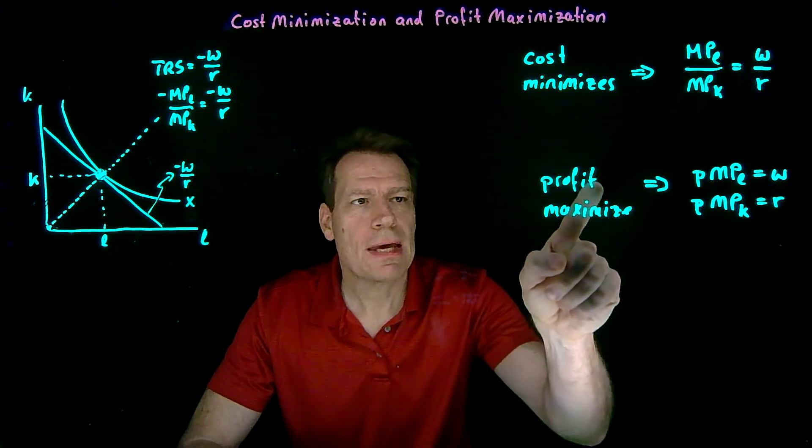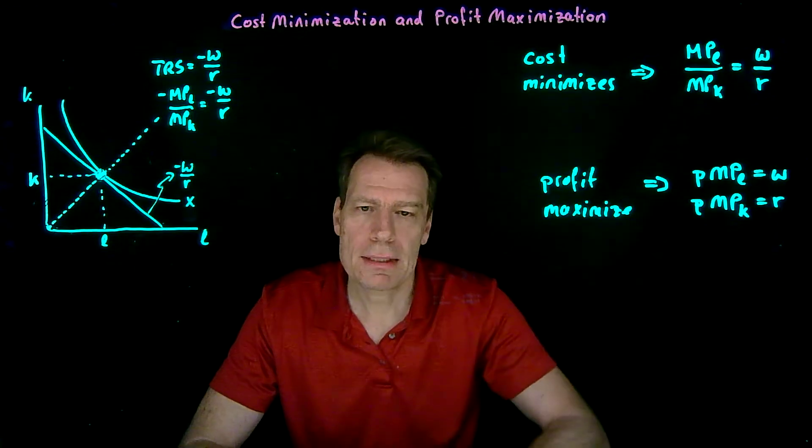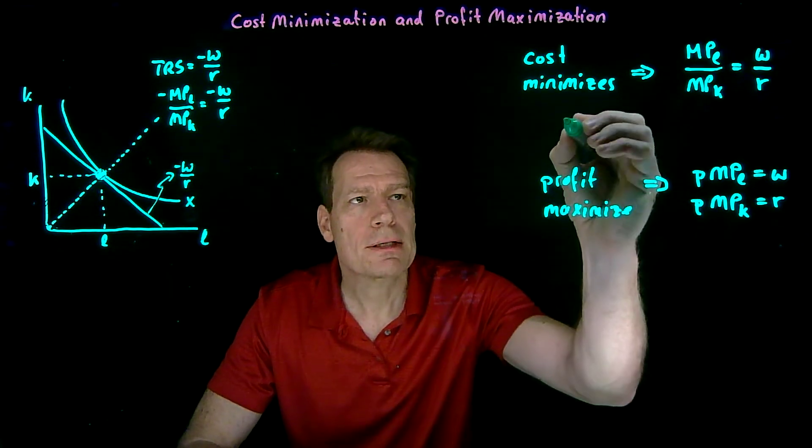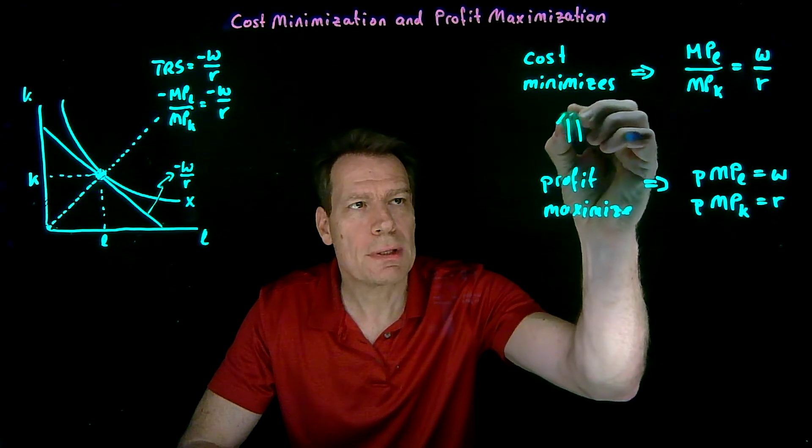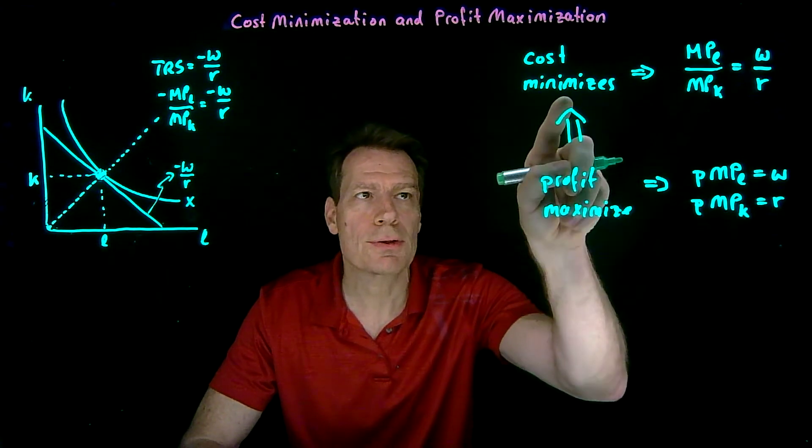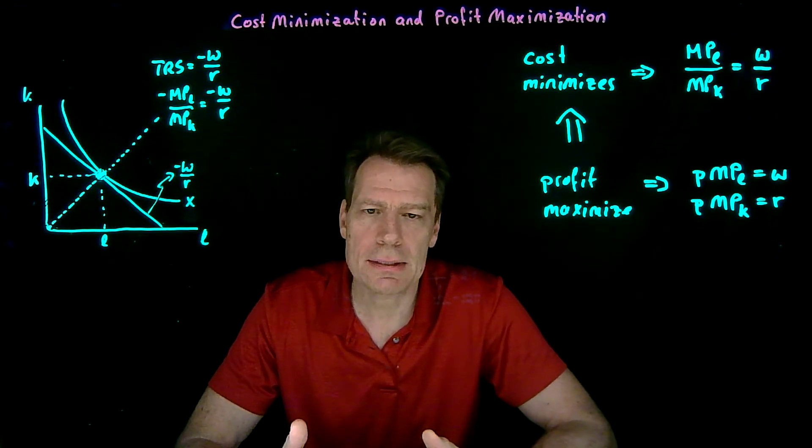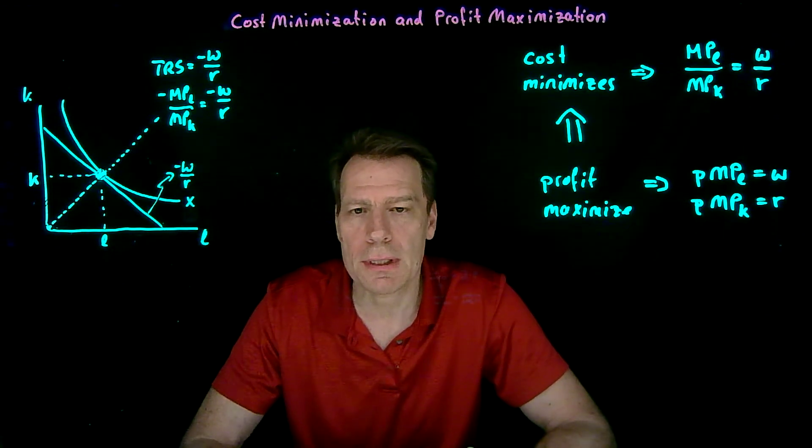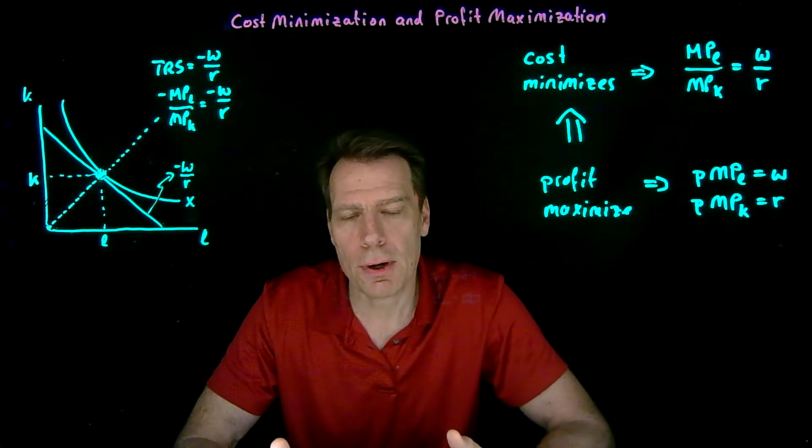That means that whenever a firm is profit maximizing and the profit maximizing conditions hold, it must mean that the firm is also cost minimizing. So profit maximizing behavior implies cost minimizing behavior. And that should make sense. If you're profit maximizing, you must be producing whatever you are producing at the least possible cost.